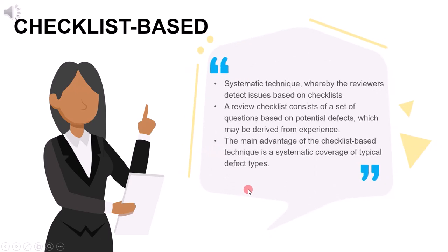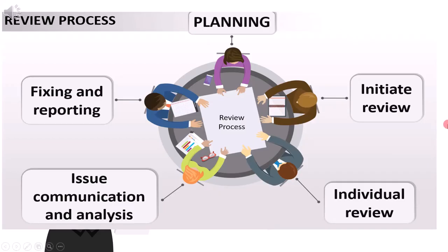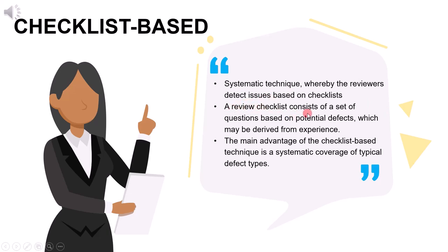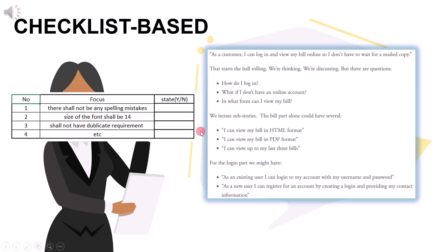Next is checklist-based review — a systematic review technique where review is based on a checklist provided during the initiation stage. The main advantage is systematic coverage of typical defect types. However, reviewers should not restrict themselves only to the checklist; they should also look for defects based on their own experience and skills. The checklist makes the review process more focused, but additional defect discovery beyond the checklist is encouraged.